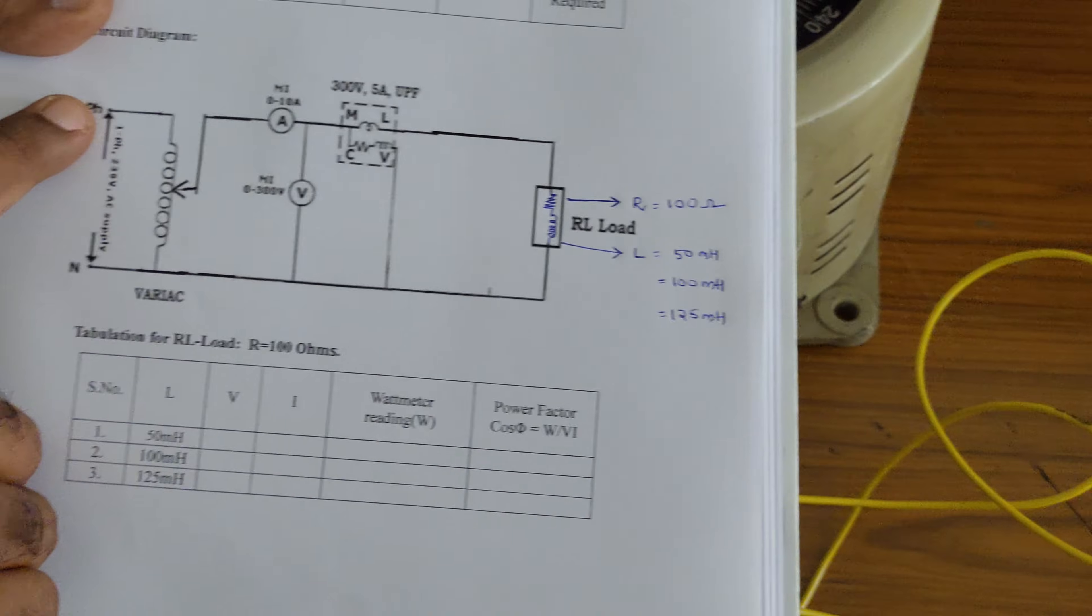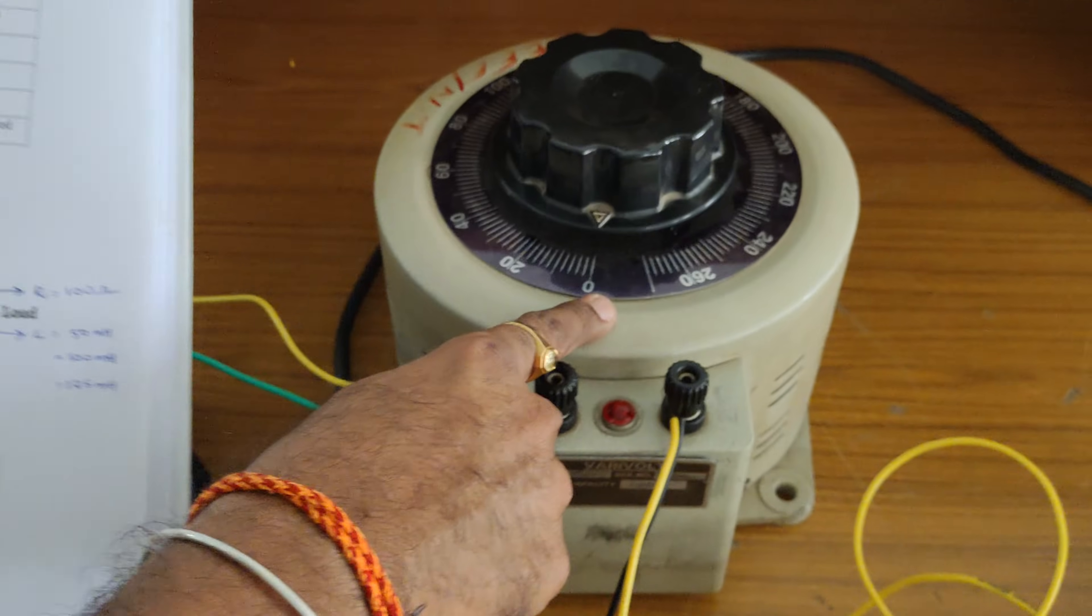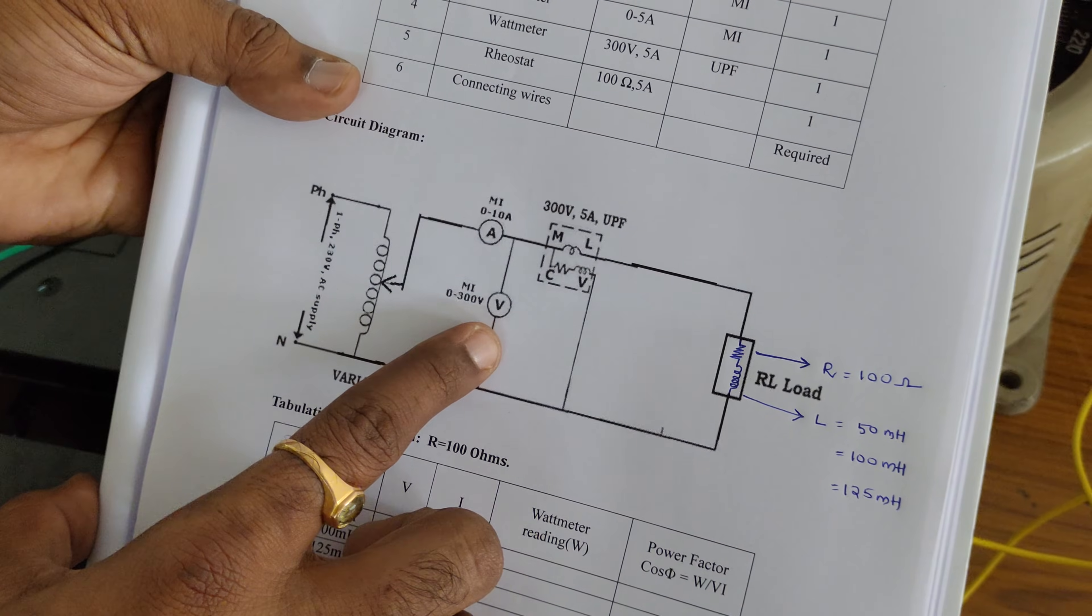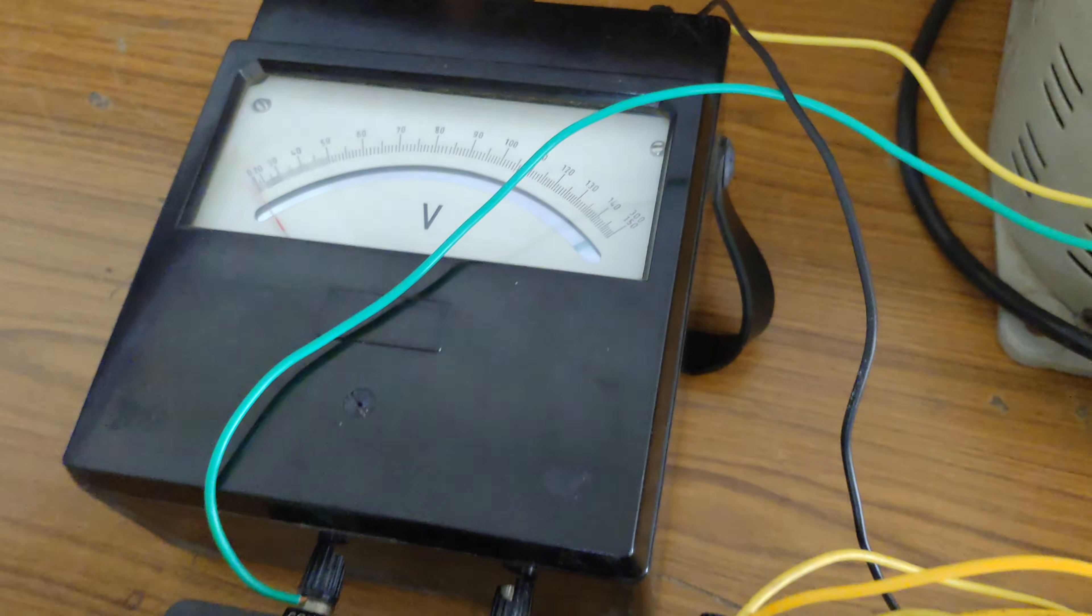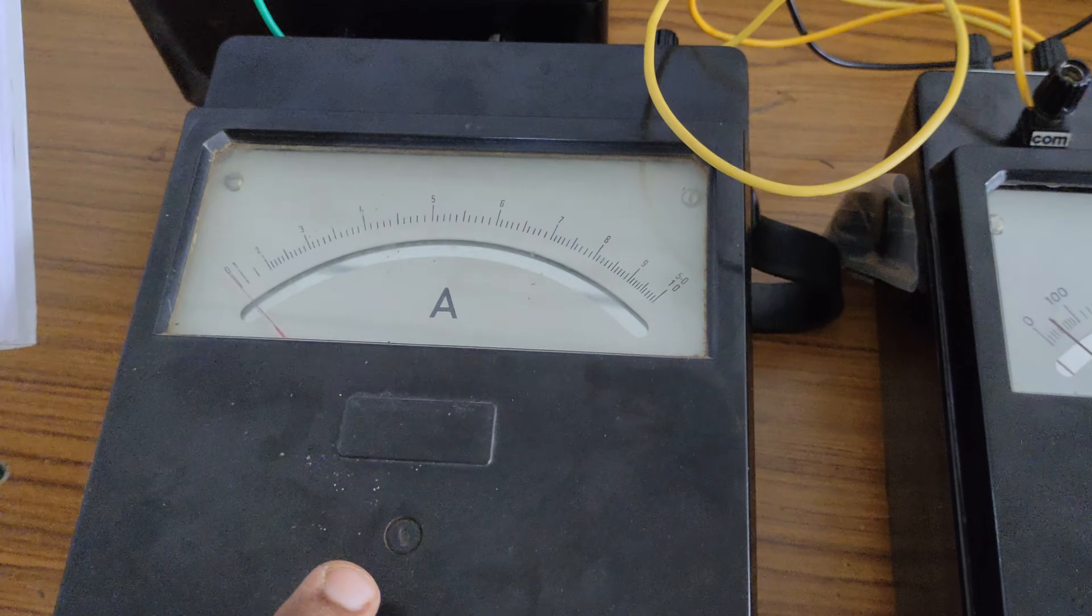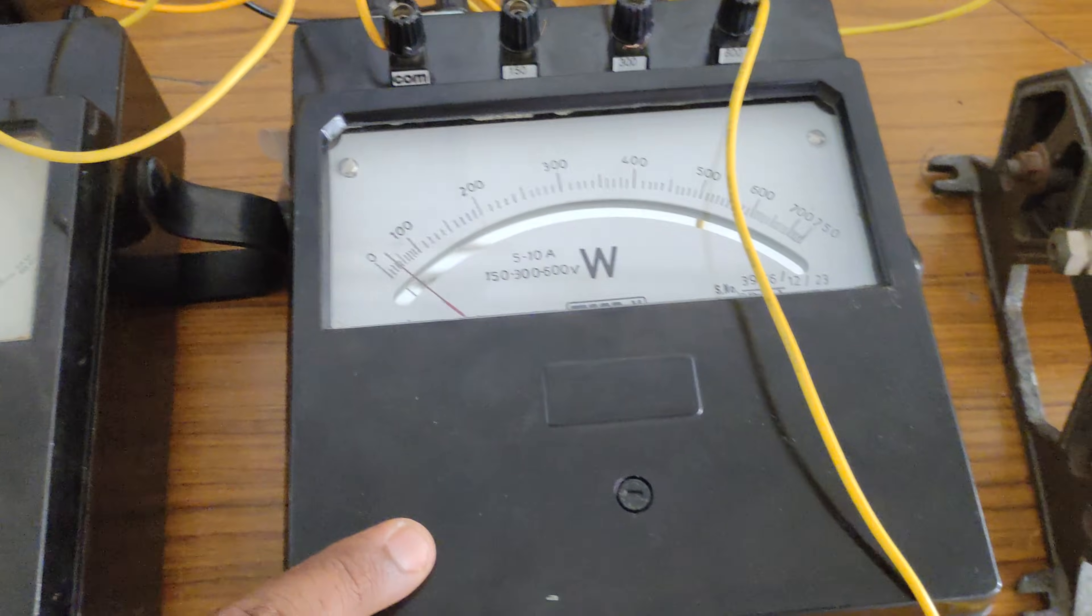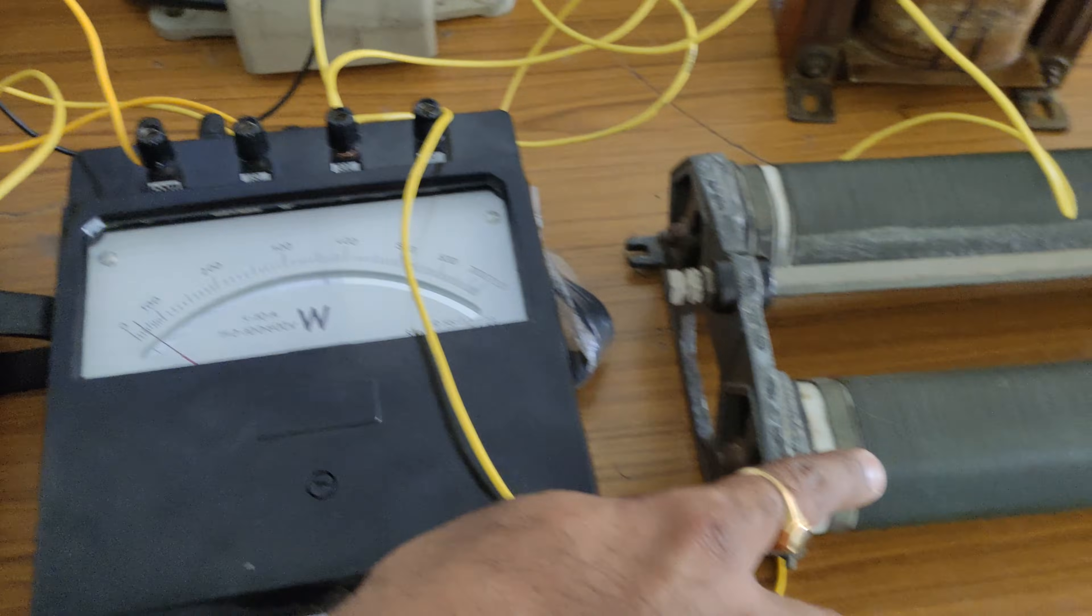Observe, the supply is phase and neutral now. This one is variac here. Next one we are having voltmeter, this one is our voltmeter. And another component here is ammeter. This one is ammeter and we are having some other component wattmeter.